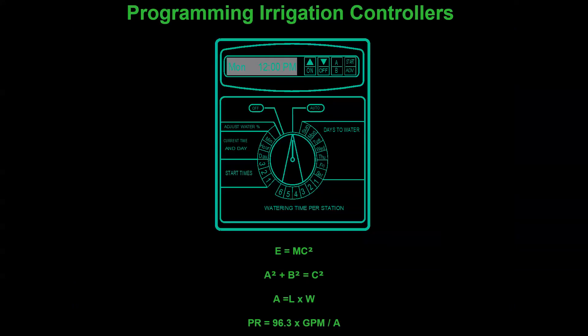Let's talk about programming these irrigation controllers. There are some formulas in my drawing that aren't in your handout, but don't worry about writing them down. You don't need to know the theory of relativity to program an irrigation controller — same with the Pythagorean theorem. The point is, these controllers aren't nearly as challenging as many people think. Today we're going to teach you how to program any irrigation controller, and even if you have a different brand or model, the same pieces of information go in, just entered in a slightly different way.